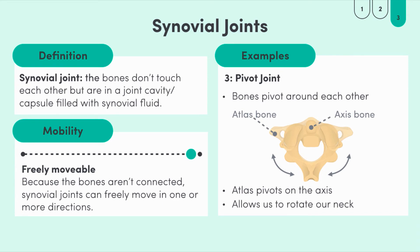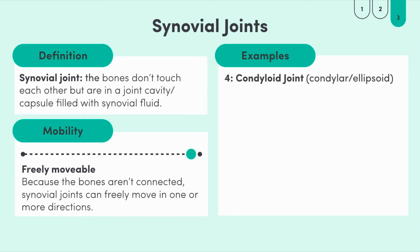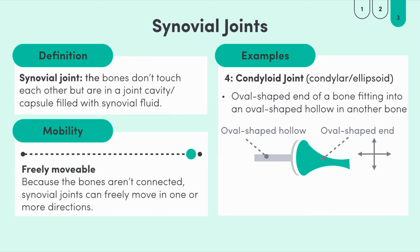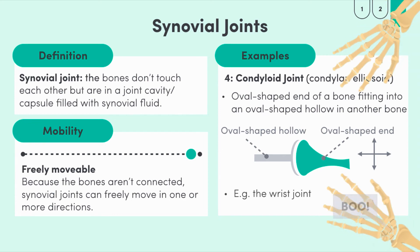Yet another type of synovial joint is the condyloid joint, which also has other names like condylar or ellipsoid joint. This joint consists of an oval-shaped end of one bone fitting into a similarly shaped hollow in the other bone. There's not as much mobility as a ball and socket. For example, our wrist joint is a condyloid joint, so it can move both side to side and up and down. When these two movements are combined, you can move your wrist around in a circular type motion.